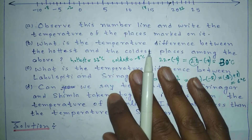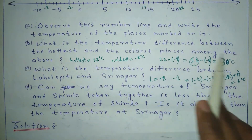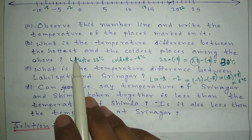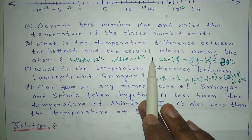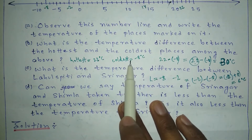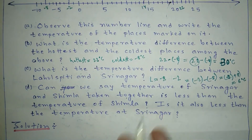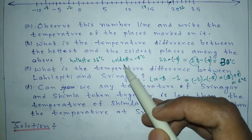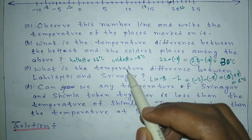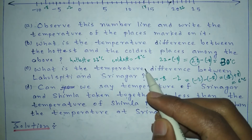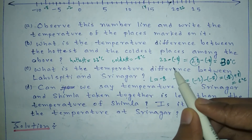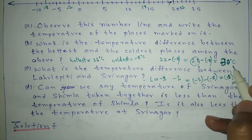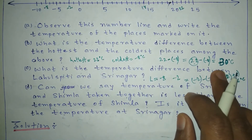In question B, we find the temperature difference between the hottest and coldest places. The hottest place is Bangalore at 22 degrees Celsius and the coldest is Lahul Spiti at minus 8. The difference is 22 minus (minus 8), which equals 30 degrees Celsius.